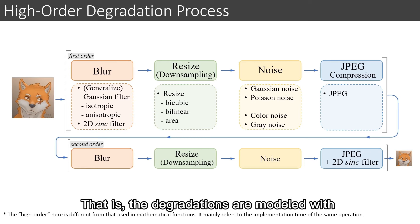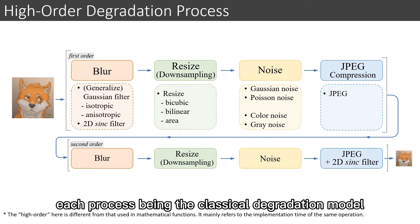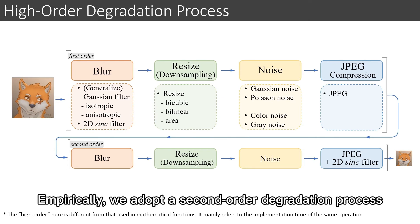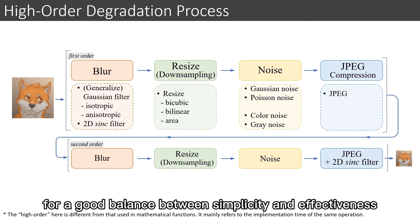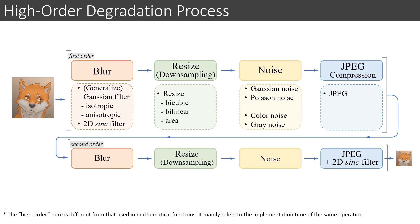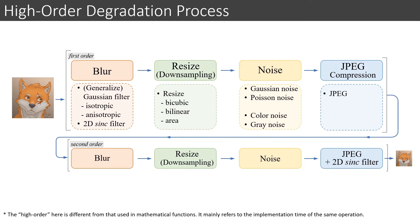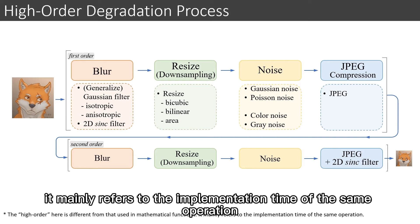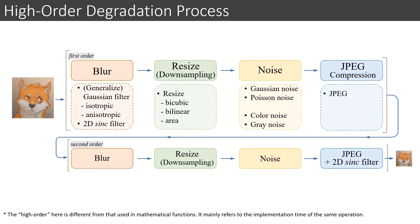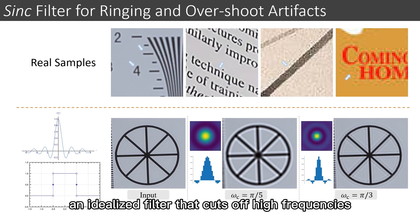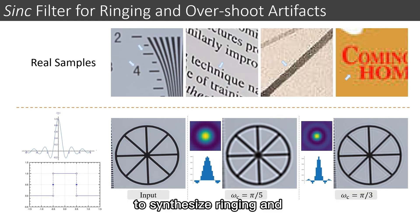This motivates us to extend the classical first-order degradation model to high-order degradation modeling for real-world degradations. That is, the degradations are modeled with several repeated degradation processes, each being the classical degradation model. Empirically, we adopt a second-order degradation process for a good balance between simplicity and effectiveness. Note that 'high-order' here refers to the number of times the same operation is applied, not the mathematical function sense. We further employ the sinc filter — an idealized filter that cuts off high frequencies — to synthesize ringing and overshoot artifacts for training pairs.